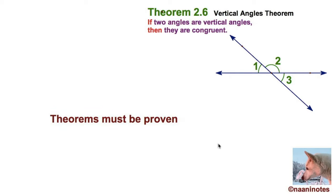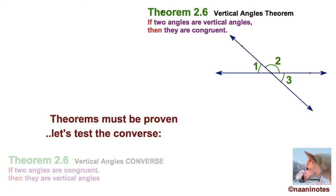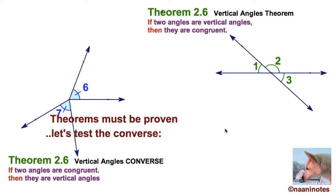We all know that theorems must be proven. And let's just use this as an example to test the converse. I'm going to draw them. I'll state the converse vertical angles converse. I'll say if two angles are congruent, then they're vertical. So I'm going to switch the conclusion and the hypothesis. I'm going to reverse the direction. That's the converse. And I'll even draw a diagram.